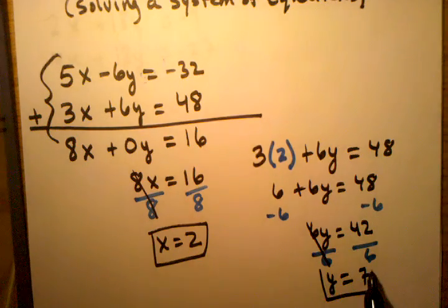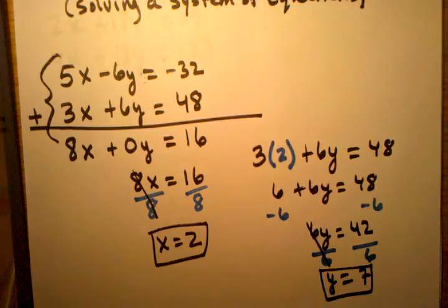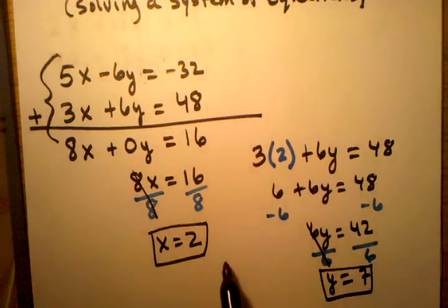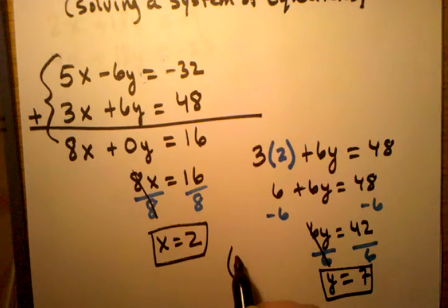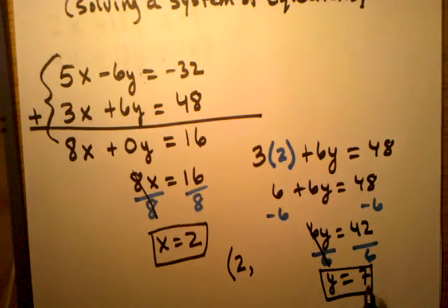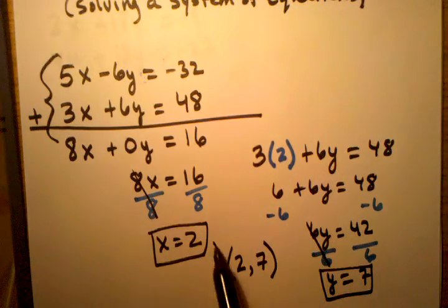Now I know what the y coordinate is. So my solution is the point where the two lines intersect. So I need to write my solution as a point, as the coordinates of a point. So the x always goes first, and then the y coordinate goes next. And that is my solution, (2,7).